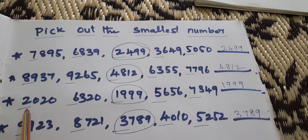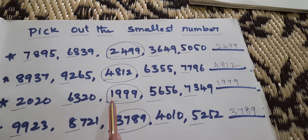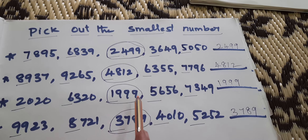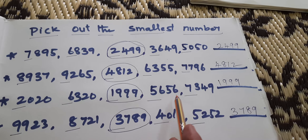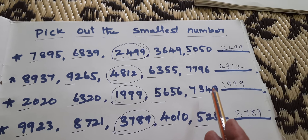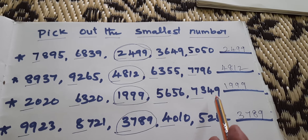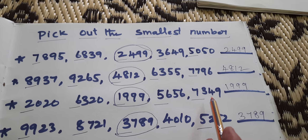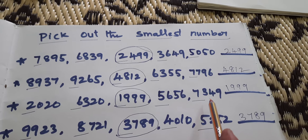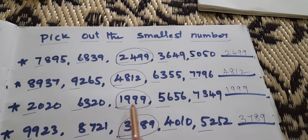Pick out the smallest number. 1999, 2020, 6320, 1999, 5656, 7349. Which one is the smallest number? Pick out the smallest number. 1999 is the smallest number.